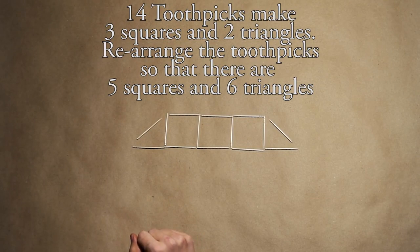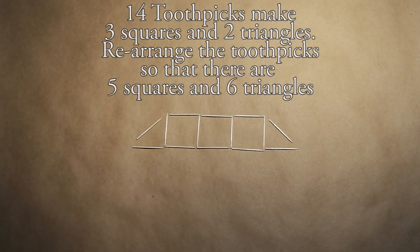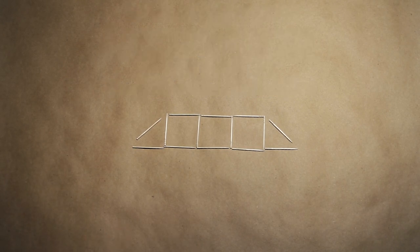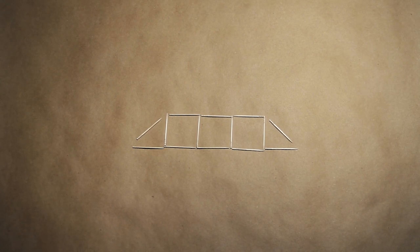And last up we got level three. This one we have three squares and two triangles. Your job is to make five squares and six triangles by rearranging these toothpicks. There is no limit, you can rearrange them however you'd like, but you need to make five squares and six triangles. So go ahead and pause the video and give it a shot. Good luck.